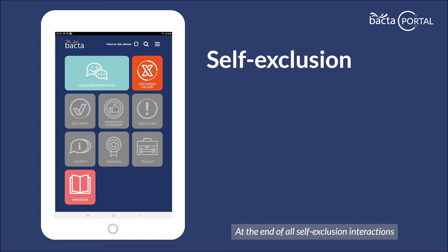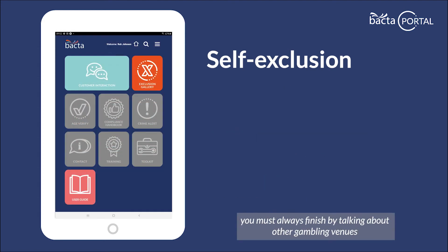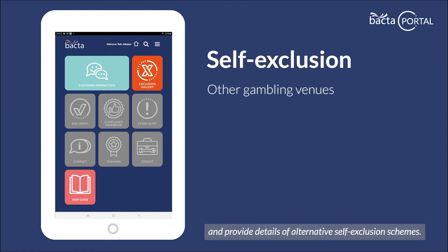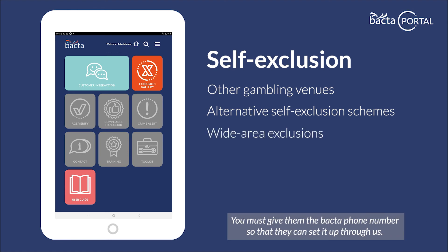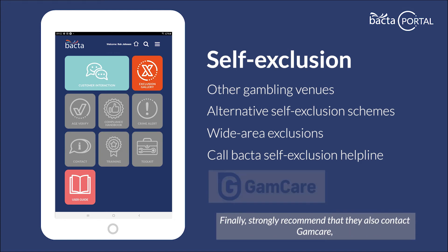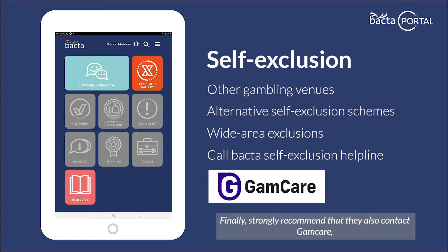At the end of all self-exclusion interactions, you must always finish by talking about other gambling venues and provide details of alternative self-exclusion schemes. If the customer requested a wide area exclusion, you must give them the back-office phone number so they can set it up through us. Finally, strongly recommend that they also contact Gamcare, who provide a 24/7 confidential helpline for people wishing to talk about their gambling behaviour.